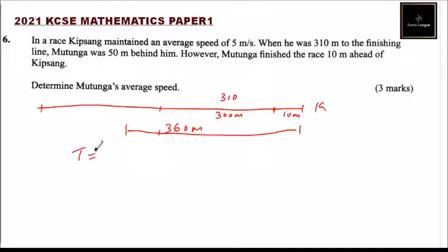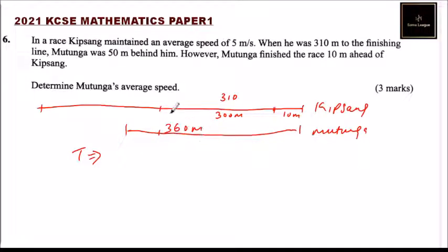The time taken by Motunga to cover 360 meters is the same time Kipsang took to cover 300 meters, because Motunga finished 10 meters ahead of Kipsang.